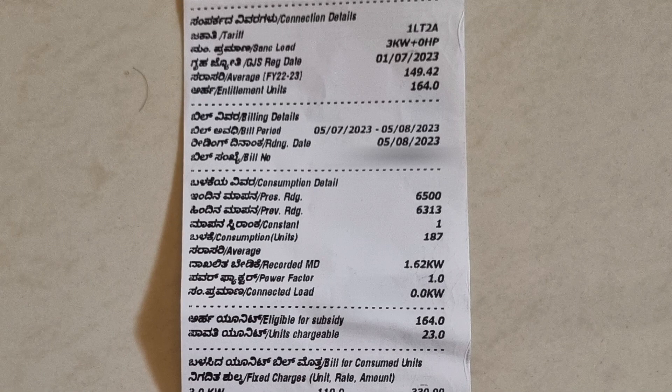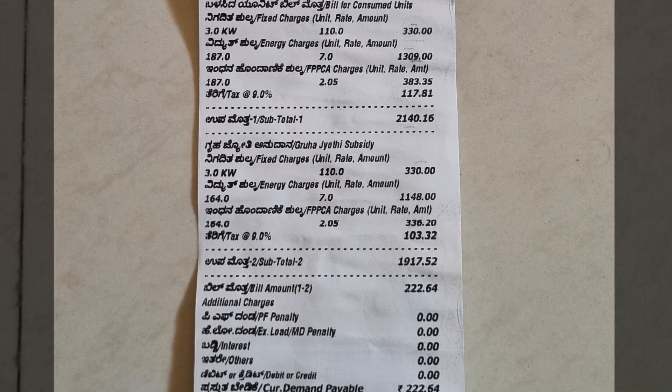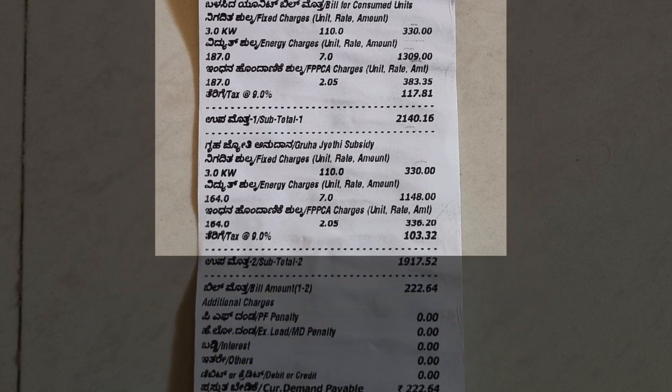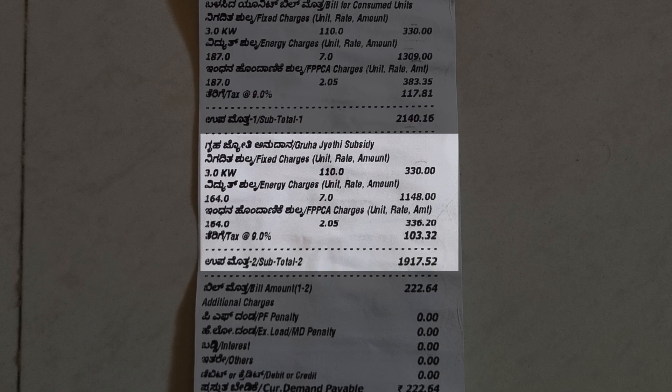You will be charged only for those 23 units. Looking at how it's calculated, you can see the fixed charges for 3 kilowatts. Previously only this computation part of the bill was visible, where 7 rupees was the energy charge per unit — unlike before, which had three different slabs.